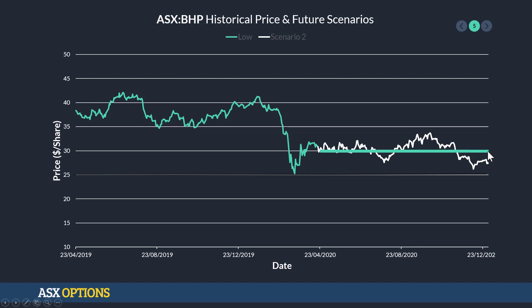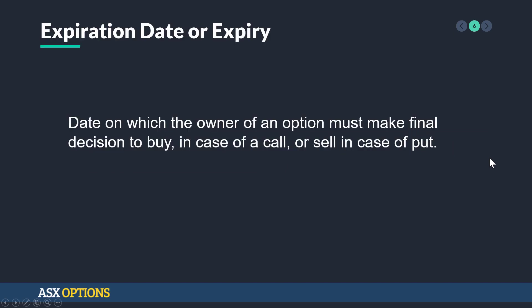So if this is a call, we wouldn't want to exercise it. If it was a put, we might want to exercise it. The expiration date or expiry is the date on which the owner of an option must make a final decision to buy in the case of a call, or sell in the case of a put.